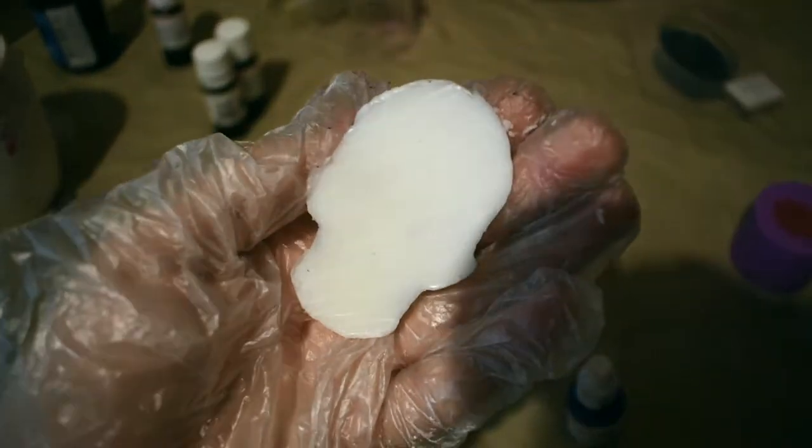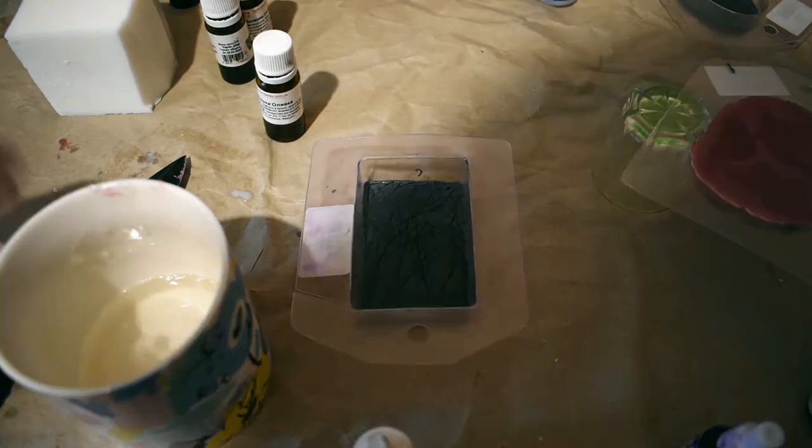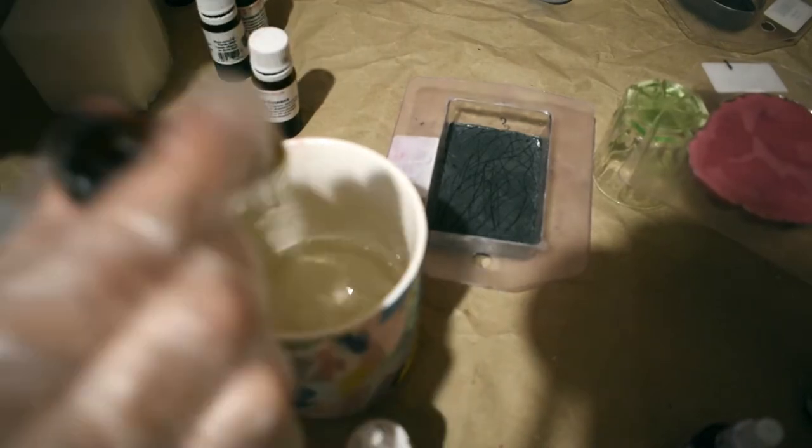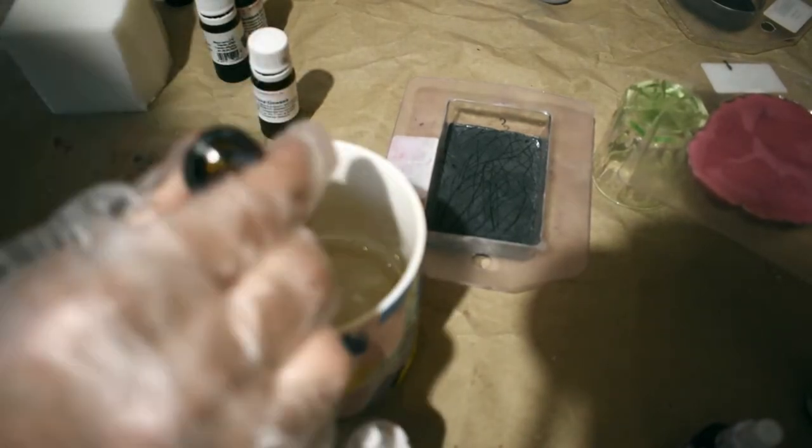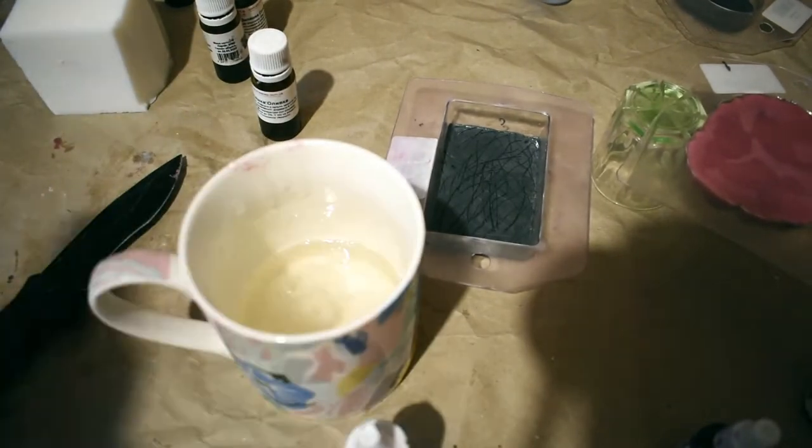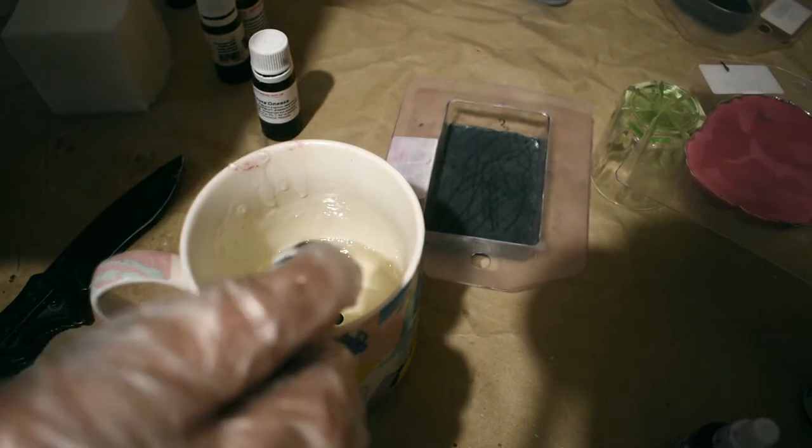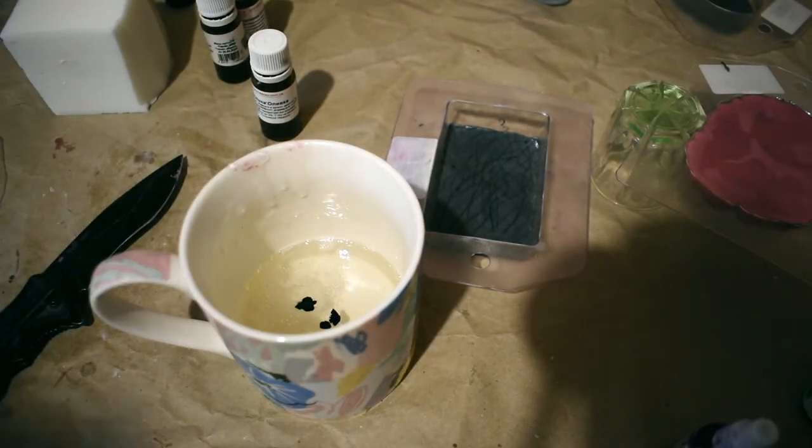Once you've done, melt some more transparent soap, add flavor and a few drops of black dye. You need to add black color in order to make the soap look misty, as if the skull looks at you from the darkness. I think I should have added one more drop, but that will do.